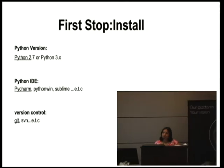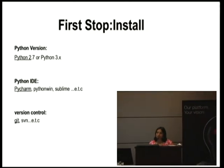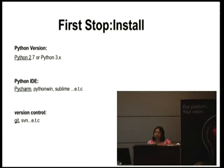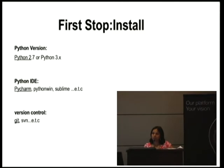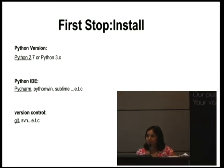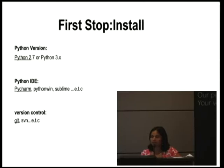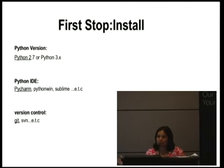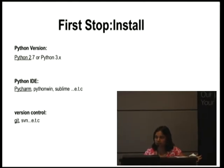But I decided to go with Python 2.7 because a lot of third-party libraries which you might be using might not be already ported to Python 3. So when you are starting, you don't want to get into those issues where a library is not ported to Python 3 and your project is in Python 3. So to avoid that, I chose Python 2.7.